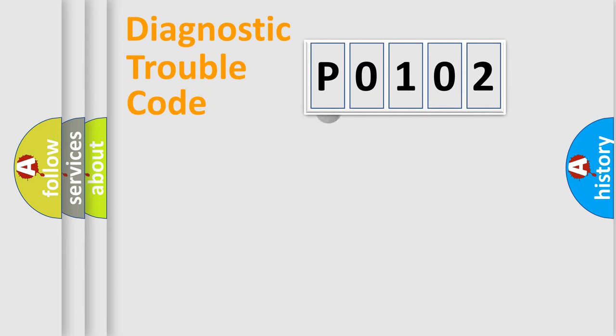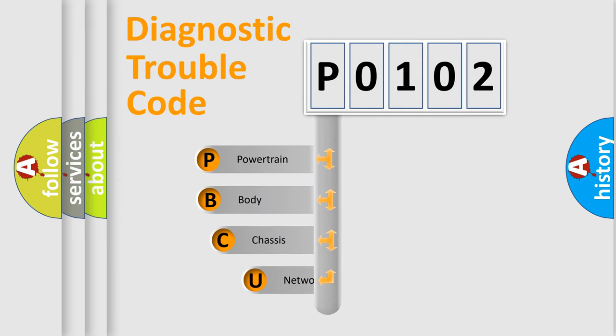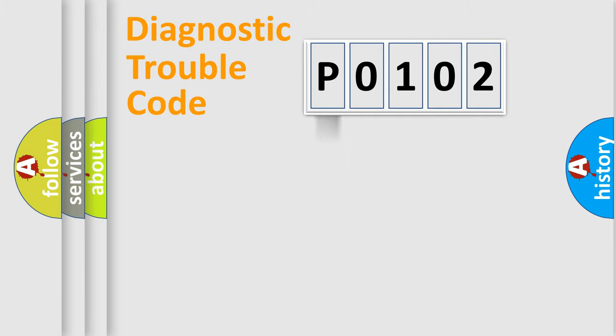First, let's look at the history of diagnostic fault code composition according to the OBD2 protocol, which is unified for all automakers since 2000. We divide the electric system of automobile into four basic units: Powertrain, Body, Chassis, and Network.